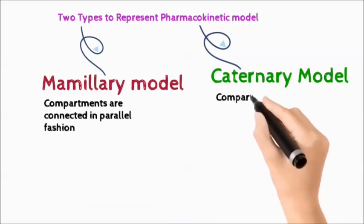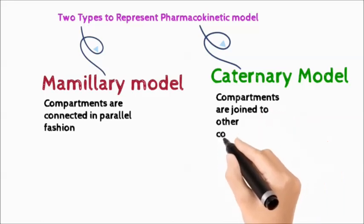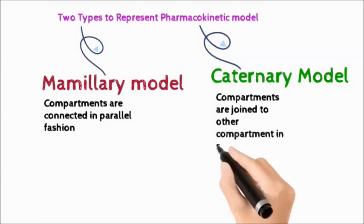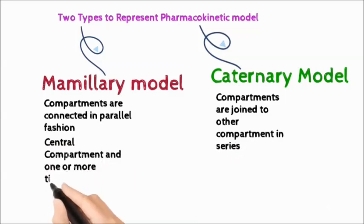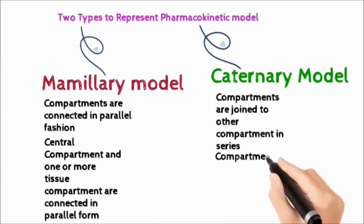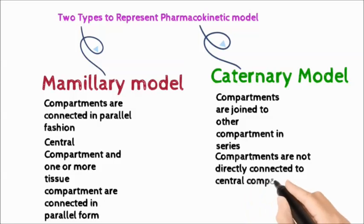Whereas in Caternary Model, Compartments are joined to other Compartments in a Series. Central Compartment and one or more Tissue Compartments are connected in parallel form. Whereas in Caternary Model, Compartments are not directly connected to Central Compartment. That's why it's rarely used.